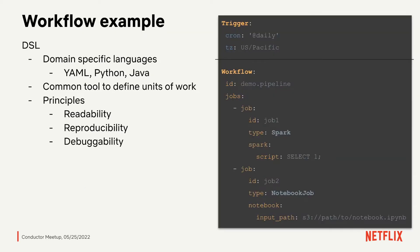Here I use the DSL as an example. We found that a human-readable DSL is very helpful and plays an important role to support different use cases. At Netflix, users can write their workflow definitions using multiple DSLs like YAML, Python, or Java. The YAML DSL is actually the most popular one due to its simplicity and ease of understanding for engineers and non-engineers. Here on the right side, this workflow consists of two jobs: job one runs a Spark SQL query and job two runs a notebook. For job one, users just need to put their SQL query in the script as an inline query, and for job two, users put their notebook in an S3 path. This workflow is scheduled to run every day at midnight in the Pacific time zone, and users are not exposed to the internals of executing a particular job.